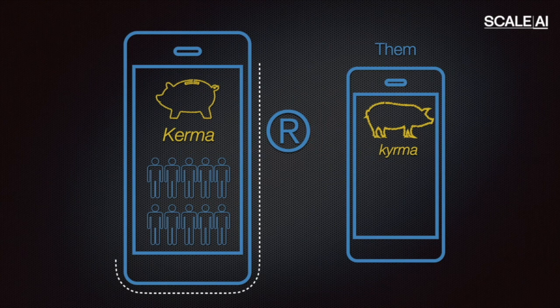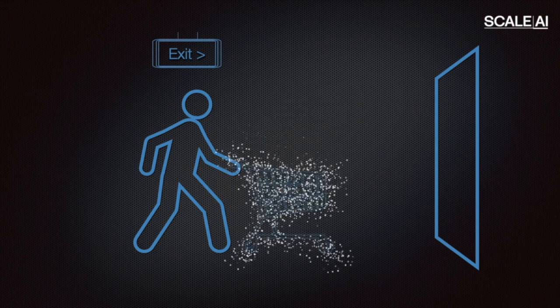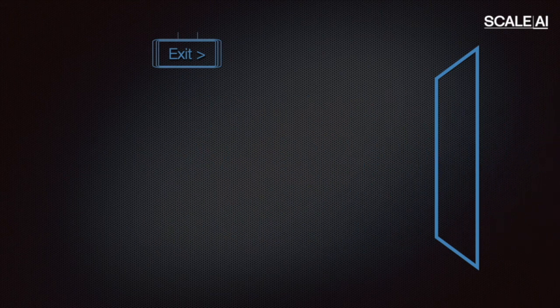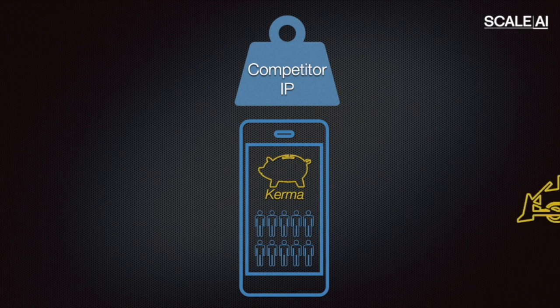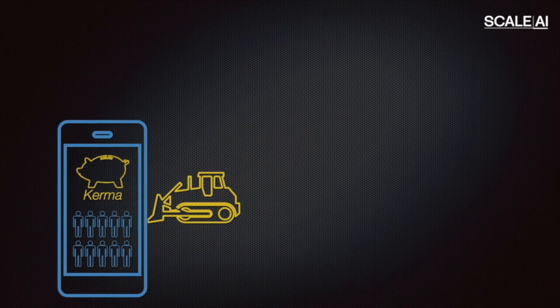With a registered trademark, you can react when someone copies your brand ideas. When you protect your information and data, you can react when someone takes them to a competing business. And with IP due diligence, like a freedom to operate search, you can find and avoid problems before they find you.